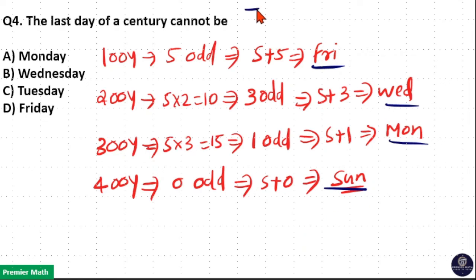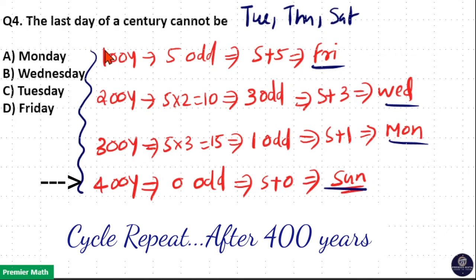It cannot be Tuesday, Thursday, and Saturday. Because this cycle will repeat for the rest of the centuries. After 400 years, this Friday, Wednesday, Monday, and Sunday will repeat for the rest of the centuries for the last day of century.